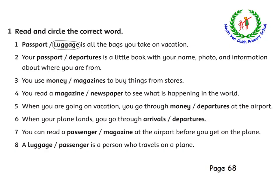Open your workbook and listen to my explanation. Exercise number one, page 68 — read and select the correct word. Number one: all the bags you take on vacation. Chúng ta cùng quan sát phần chữ in đậm nhé — là tất cả những túi sách mà bạn đem theo khi đi nghỉ mát. Vậy ở đây chúng ta sẽ phải chọn là gì? Luggage — chứ chúng ta không thể nào chọn Passport, bởi vì Passport là hộ chiếu.